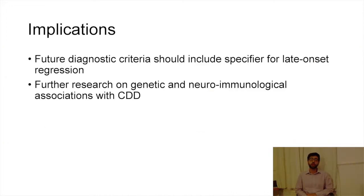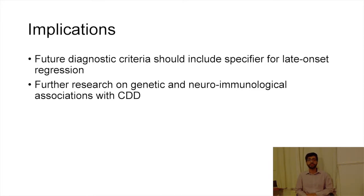Although there is only low-quality data on CDD, the findings of this literature review show that there are enough qualitative and quantitative differences between CDD and ASD to warrant further study of this low-functioning group. This may also help us understand regression in other developmental disorders. Easy identification of the CDD group is therefore essential, but not possible under current diagnostic criteria. We recommend that future diagnostic criteria should include a specifier for late-onset regression with a descriptor for a more global pattern of deficit, including adaptive skills and disturbance of affect.